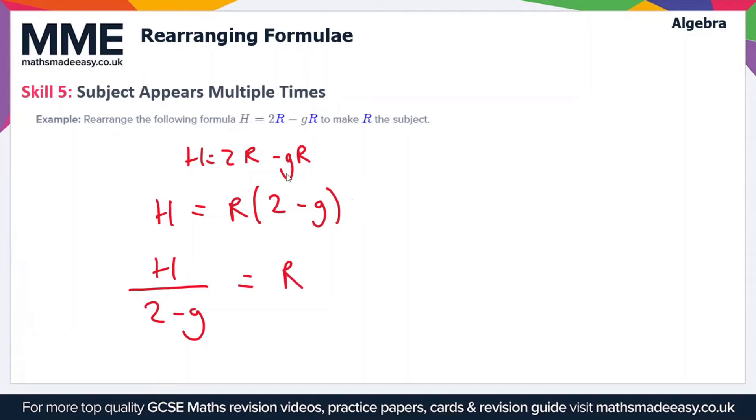If you want, you can swap the order over so you get R = h/(2 - g). Both are perfectly acceptable answers as R is the subject on one side of the equation on its own.